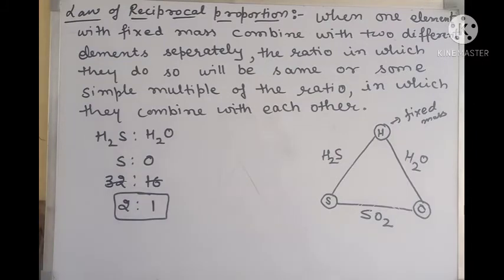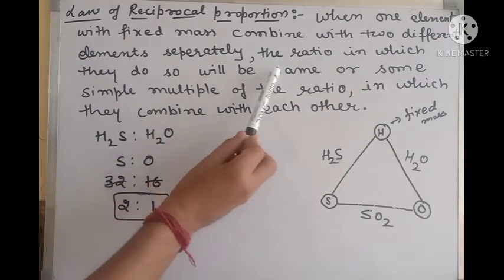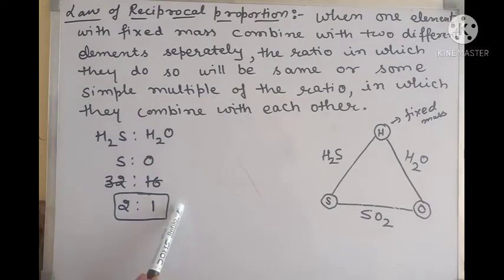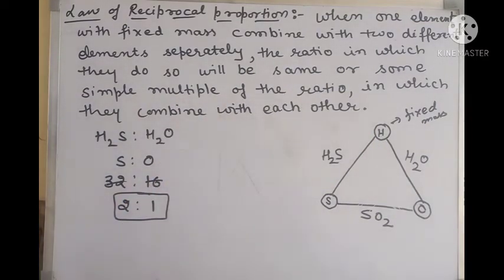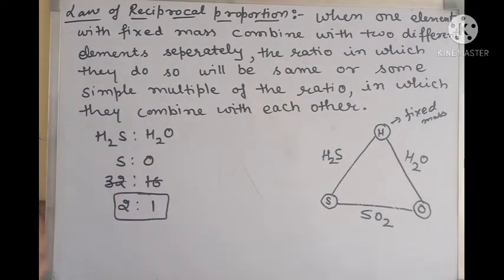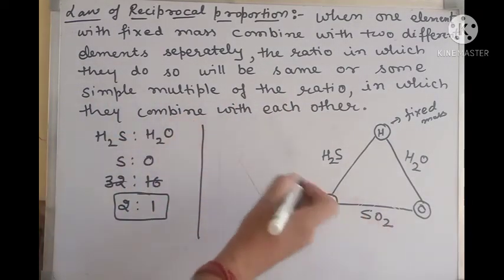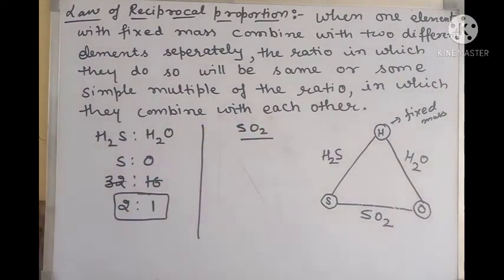So 2:1 is the ratio in which sulfur and oxygen combine with fixed mass of hydrogen. Now we will see whether this ratio is the same or some multiple. In which they combine with each other - they combine to form sulfur dioxide.